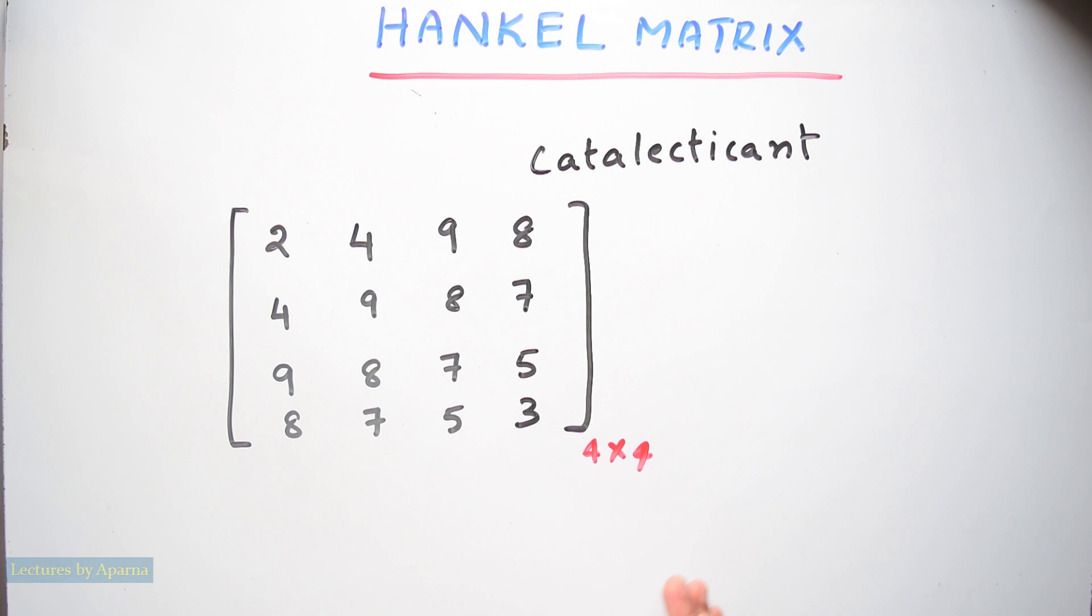The condition to be satisfied for it to be a Hankel matrix is that ascending skew diagonal from left to right is a constant. Ascending skew diagonal means these diagonals. All elements coming in these diagonals will be same.